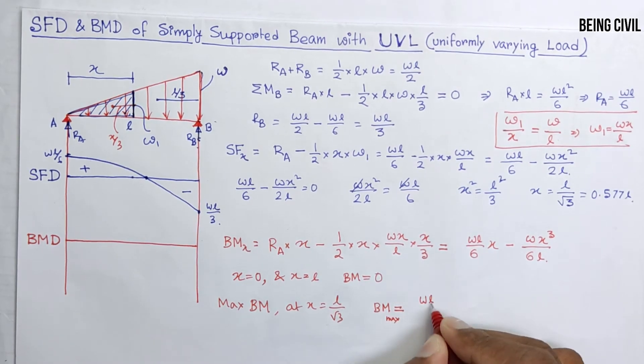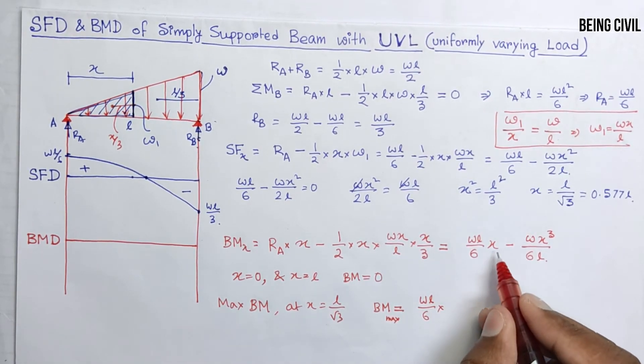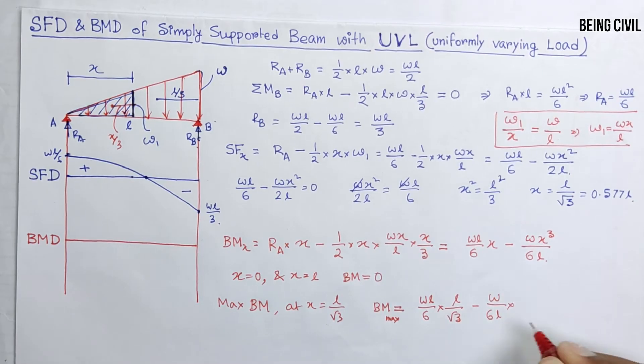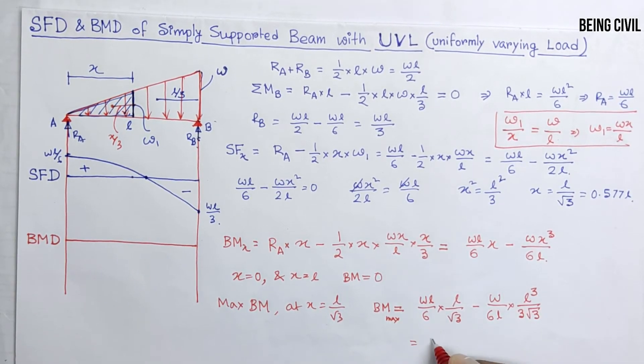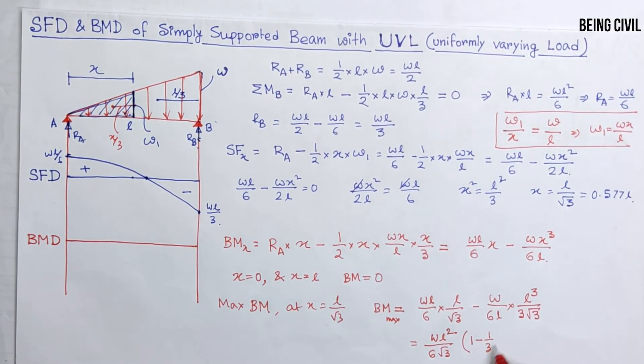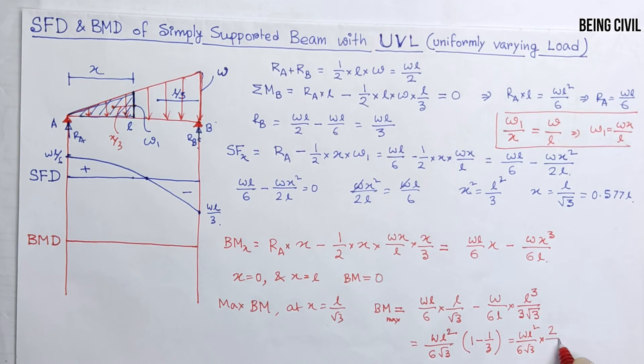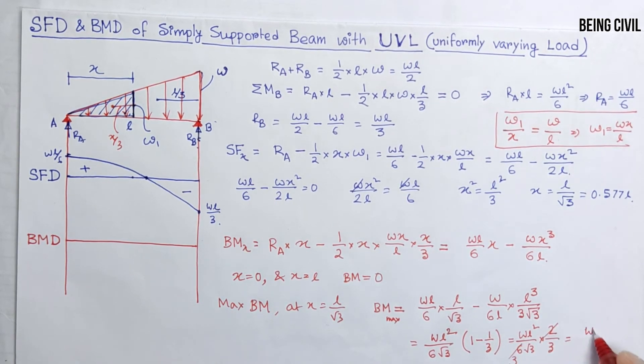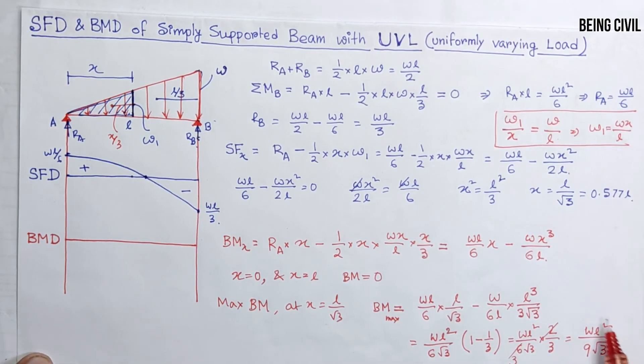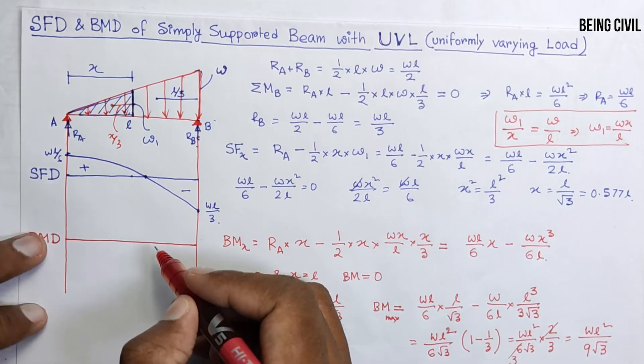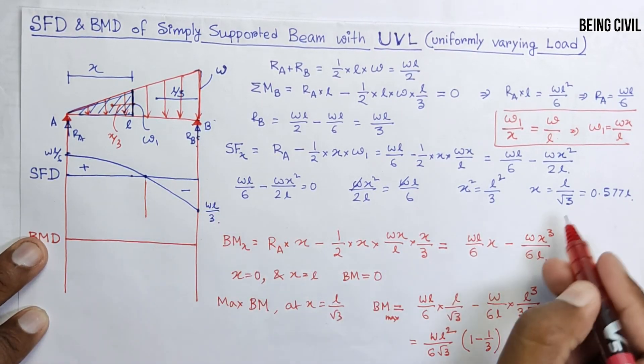Put the value of X equals L by root 3 in this equation. And you see this is the sagging bending moment, so the maximum bending moment is WL squared by 9 root 3, which is positive, and it is at a distance of X equals L by root 3.